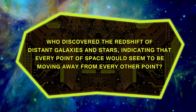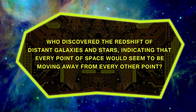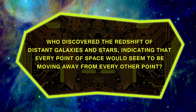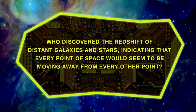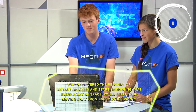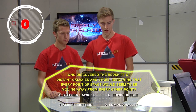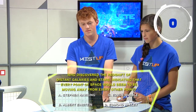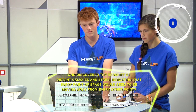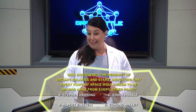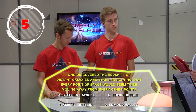Who first discovered the redshift of distant galaxies and stars, indicating that every point of space would seem to be moving away from every other point? Multiple choice: A, Stephen Hawking; B, Albert Einstein; C, Edwin Hubble; or D, Edmund Halley. Red team answers C, Edwin Hubble. That's correct.